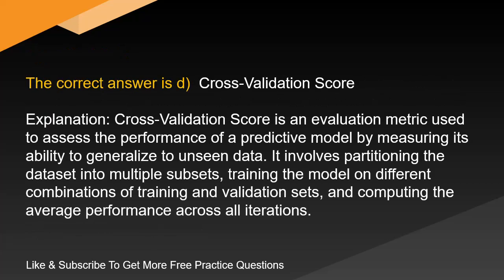The correct answer is D. Cross-validation score. Cross-validation score is an evaluation metric used to assess the performance of a predictive model by measuring its ability to generalize to unseen data. It involves partitioning the dataset into multiple subsets, training the model on different combinations of training and validation sets, and computing the average performance across all iterations.